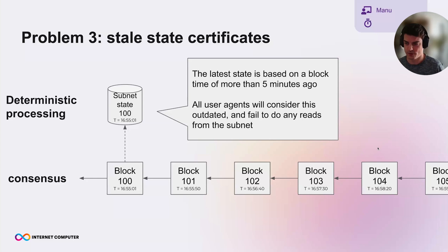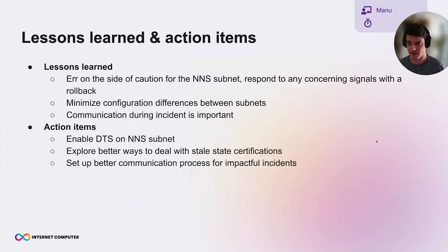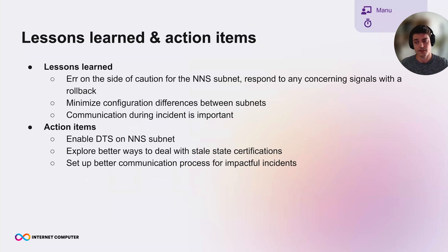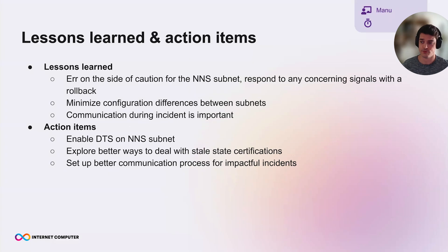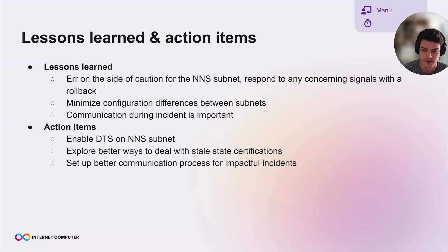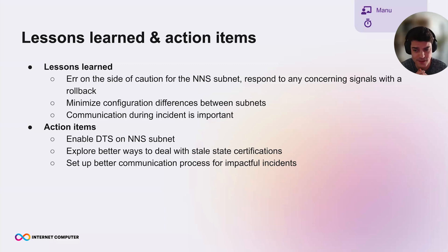Those three problems combined to cause the incident. Key learnings: first, we should always err on the side of caution for the NNS subnet — we saw the regression earlier and should have immediately proposed rolling back to an older version without LSMT. Second, different configurations between subnets are very risky, and we should work hard toward minimizing configuration differences.